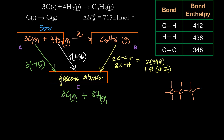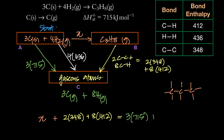The Hess's cycle gives: going from A to B via C is (3 × 715) + (4 × 436), and B to C is 2 × 348 + 8 × 412. Solving for the unknown delta H gives approximately −103 kJ/mol. This shows how delta H atomization is used in bond energy calculations, along with the equations that define it.